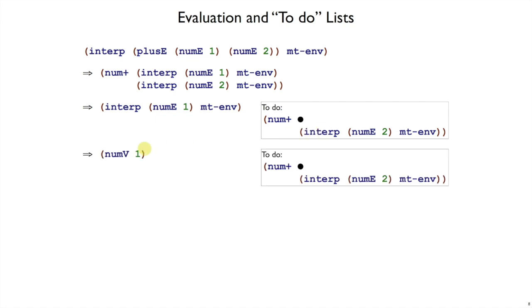So that is, when it reduces this interp num e1 to num v1, now it has a value, there's nothing left to do right here, and so it consults its to-do list. The to-do list says that num v1 goes here, now let's start working on the interp of num e2.